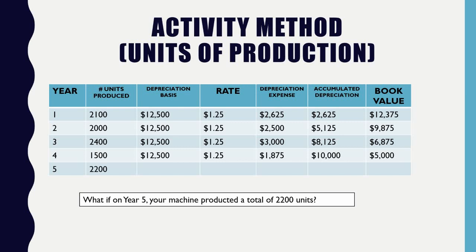What happens if in year five you produce 2,200 units instead of 2,000? The depreciation expense would be 2,200 × $1.25 = $2,750. Accumulated depreciation would total $12,750, and book value would drop to $2,250. However, a GAAP rule states that book value cannot fall below salvage value. So you cannot allow those extra 200 units to reduce book value below the $2,500 salvage value.